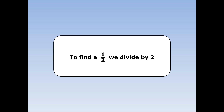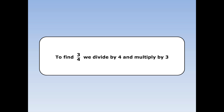To find a half of something, we divide it by two. To find a quarter of something, we divide by four. To find three quarters of something, we divide by four and multiply by three.